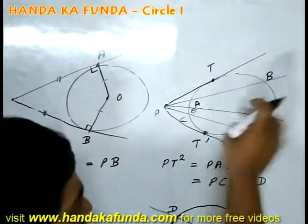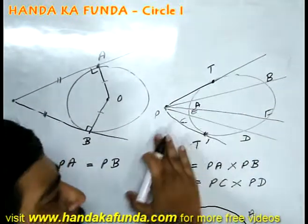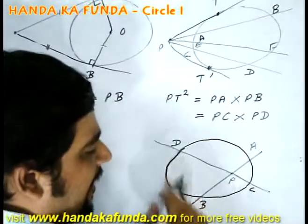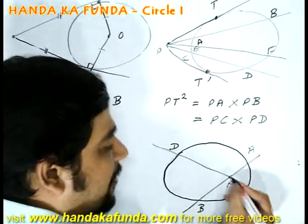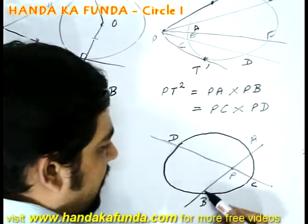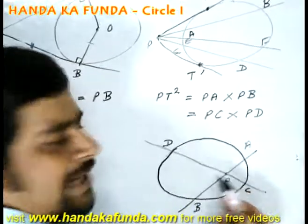Now, if here the secants were intersecting at a point outside the circle, it is possible that the secants AB and CD, they intersect at a point inside the circle. Then also the rule PA into PB is equal to PC into PD, that still stands.